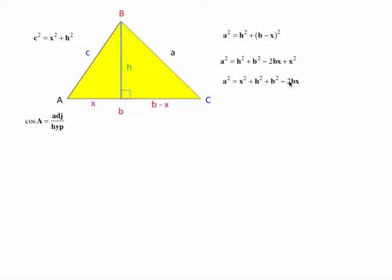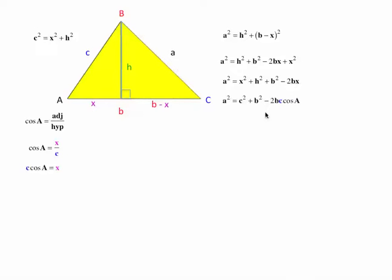I also want to replace my 2BX. I want to get rid of this X, and I notice in this right angle triangle I have a nice relationship with angle A: the cosine of angle A is adjacent over hypotenuse, which is going to be X over C. So X is going to be the same as C times cosine of A. So I'm going to replace the X with C cosine of A, and replace X squared plus H squared with C squared. I end up with A squared is equal to C squared plus B squared minus 2 times B times C cos A.